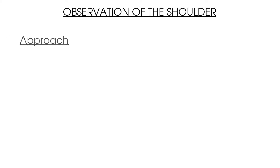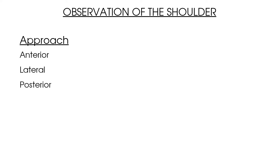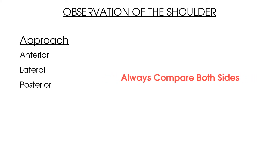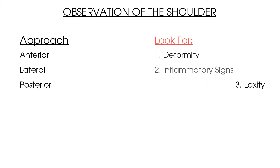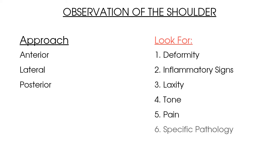So here are the key points to summarize this video on palpation of the hip joint. Break down your palpation of the hip into an anterior, lateral, and posterior view, ensuring you compare the affected and unaffected sides. When palpating your patient, look for deformity, swelling, laxity, tone, and most importantly pain. You can also look for signs of specific pathology in each view as mentioned throughout the video.